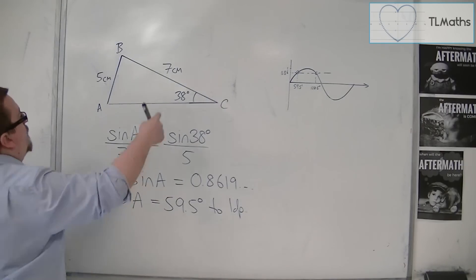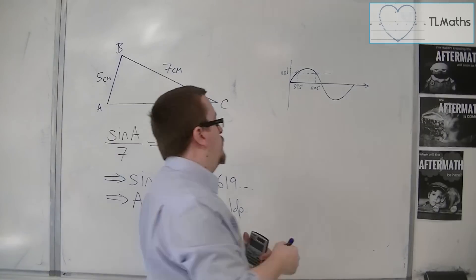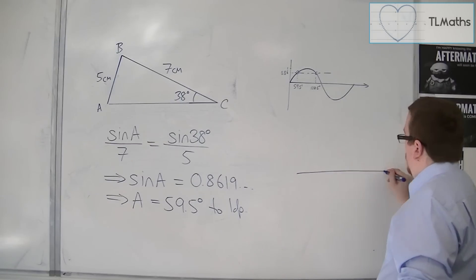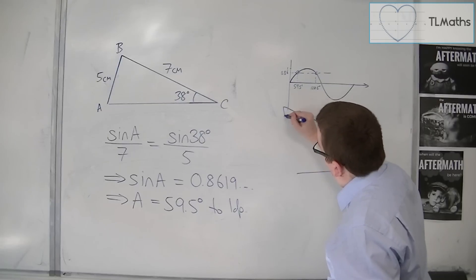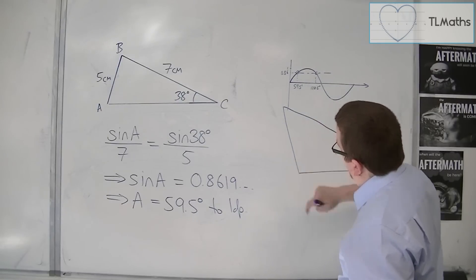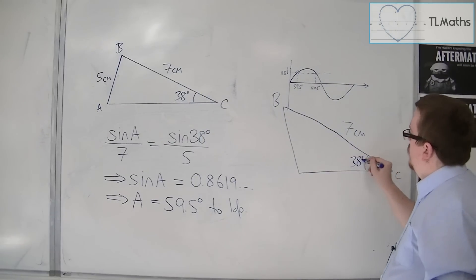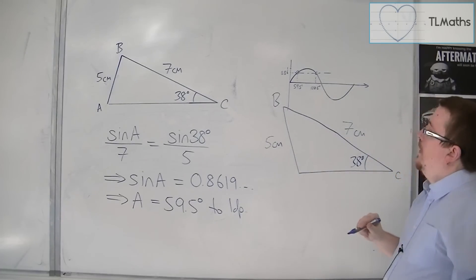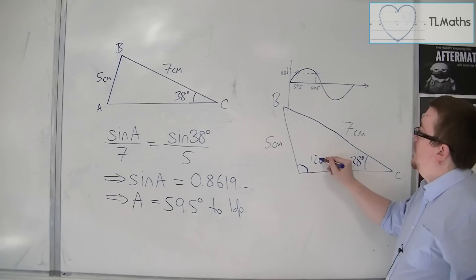Because I have that side given to me, and this side, and that angle, I could have drawn the triangle looking like this. So you have 7 centimetres between B and C. You've still got the 38 degree angle, and you've still got that length of 5 centimetres. But I've actually now got this angle of 120.5.